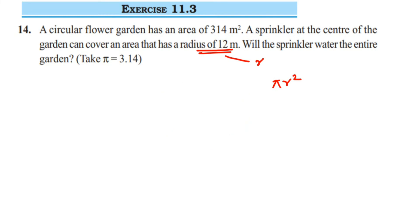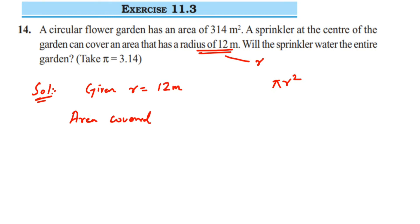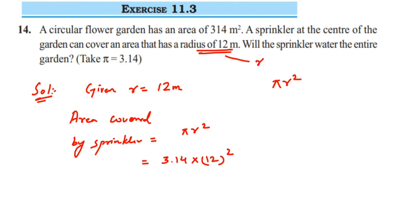The first method requires taking the square root of a number, and I don't know if you have learned square roots yet, so I'm going with the second method. The radius is given as 12 meters. Area covered by sprinkler = π r² = 3.14 × 12² = 3.14 × 144 = 452.16 square meters.